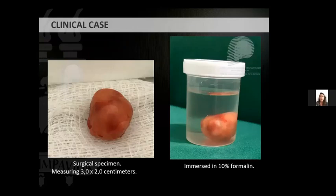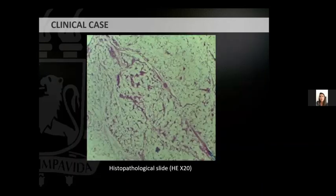Microscopic examination of the surgical specimen revealed, after being examined, a well-limited piece of soft tissue, reddish in color, measuring 3 x 2 cm. The surgical specimen was fixed in 10% formalin and sent to the pathological anatomy unit of the Hospital das Clínicas of the Federal University of Pernambuco, where the diagnosis of angiolipoma was confirmed. The histological slide stained with hematoxylin and eosin showed a well-demarcated proliferation of mature adipocytes and evidence of a high degree of vascularization.